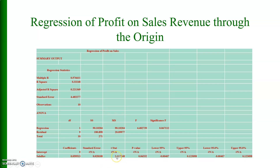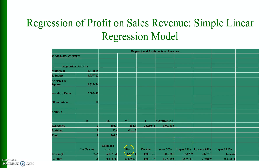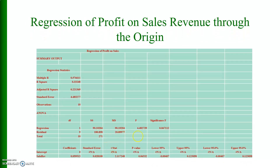The t-statistic also decreased and the p-value increased — it was previously 0.001 but now in regression through the origin it is 0.06. The results are still acceptable but not as good as the previous regression. Remember: if your theory says the intercept must be suppressed, then we should follow this model.